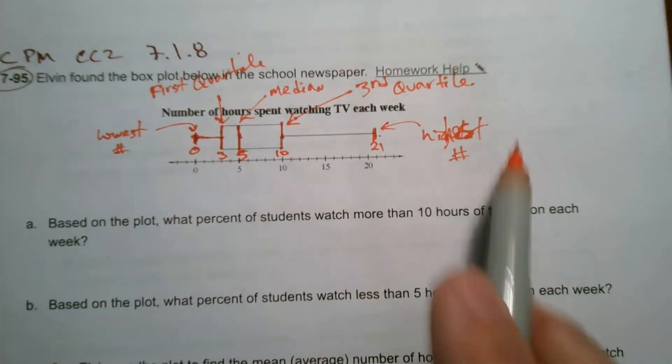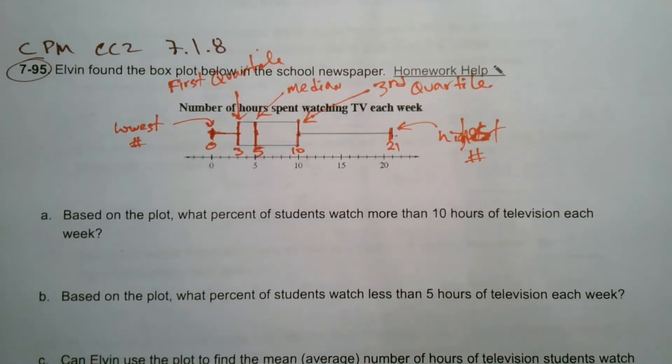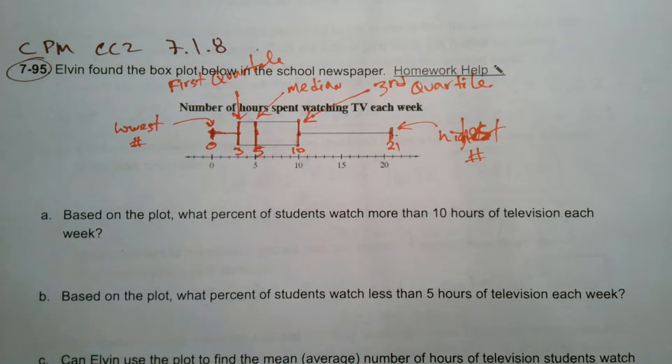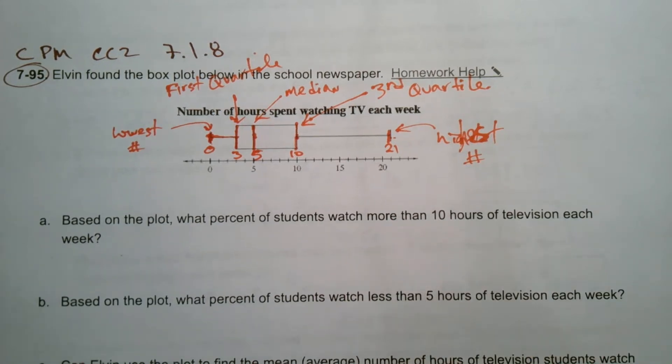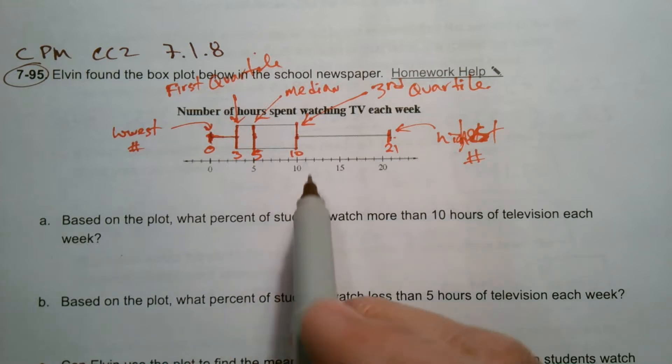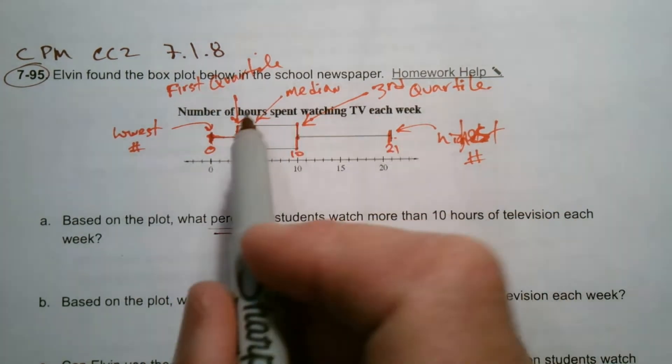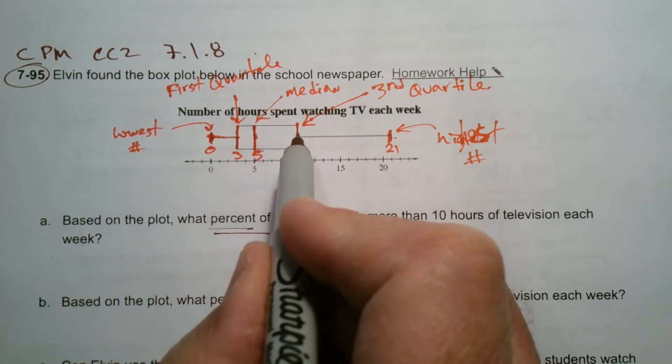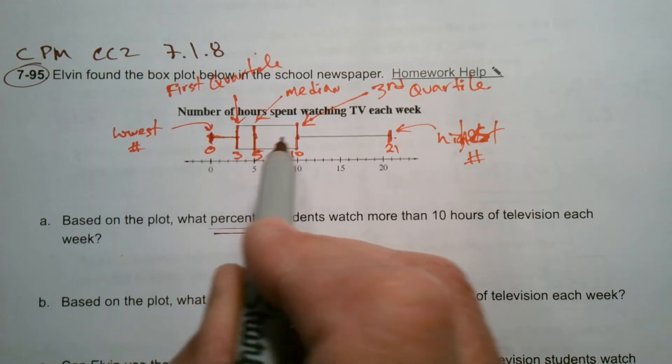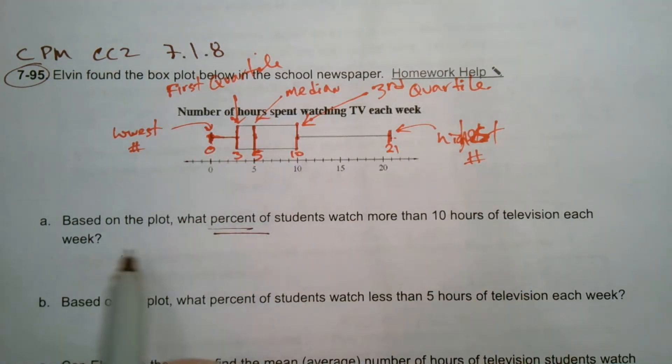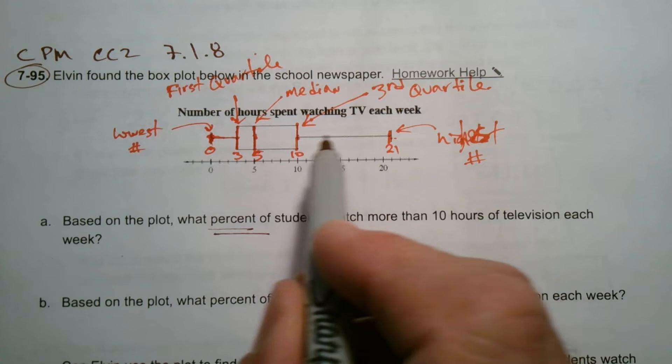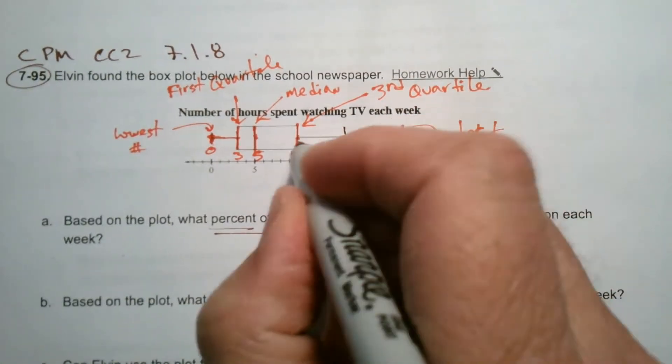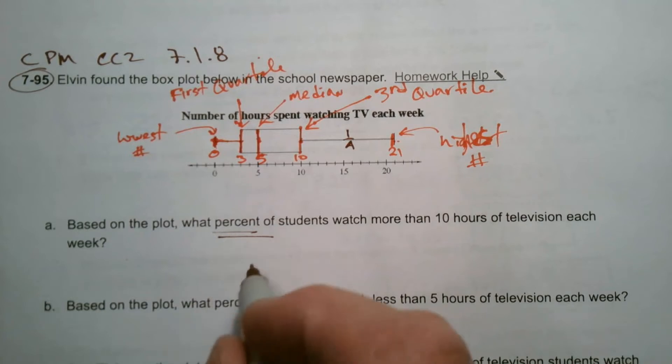All right. So now that we've been able to interpret the box plot itself, let's answer these questions. So based on the plot, what percent of students watch more than 10 hours of television each week? So more than 10. So that's 10 and more. So what percent? Remember what I just told you was a fourth of the data is in between here, a fourth of the data there, a fourth of the data is in between those two and a fourth there. So there's one fourth, one fourth, one fourth, and one fourth. So if we want to know what percent watch more than 10 hours, that's one fourth, one fourth of the data, right? One fourth as a percent is 25%.